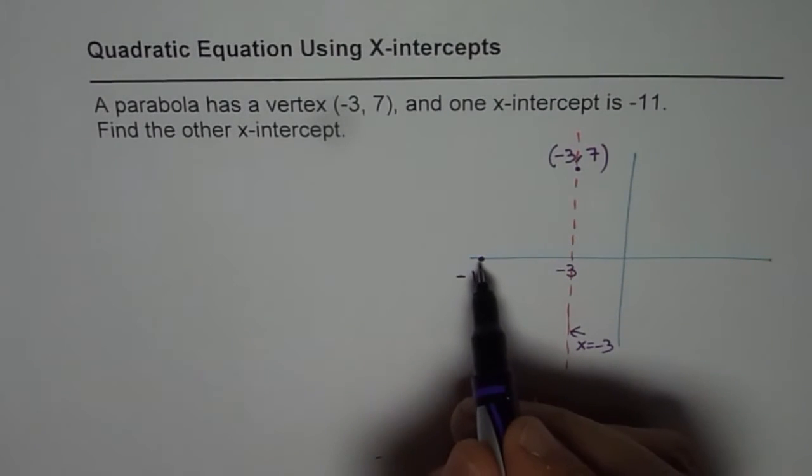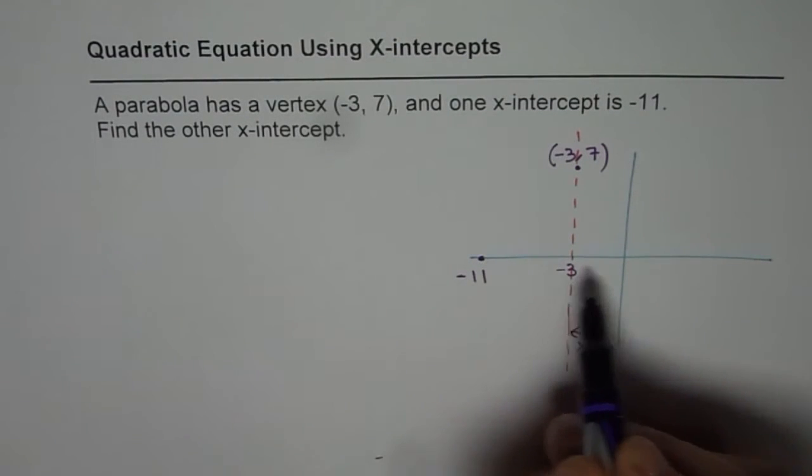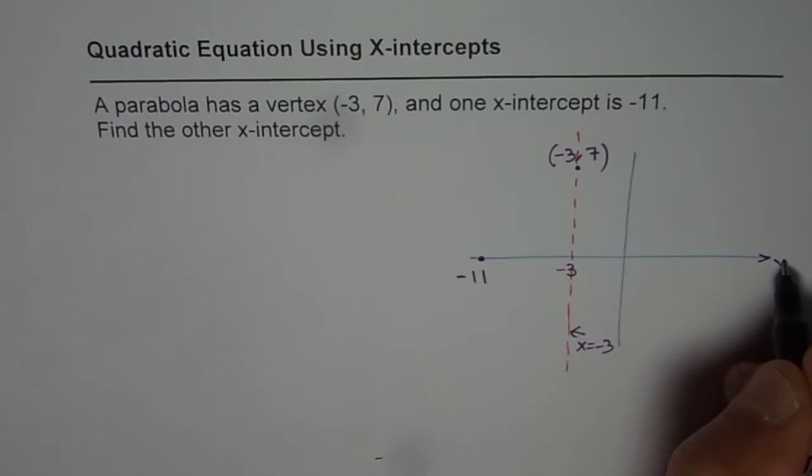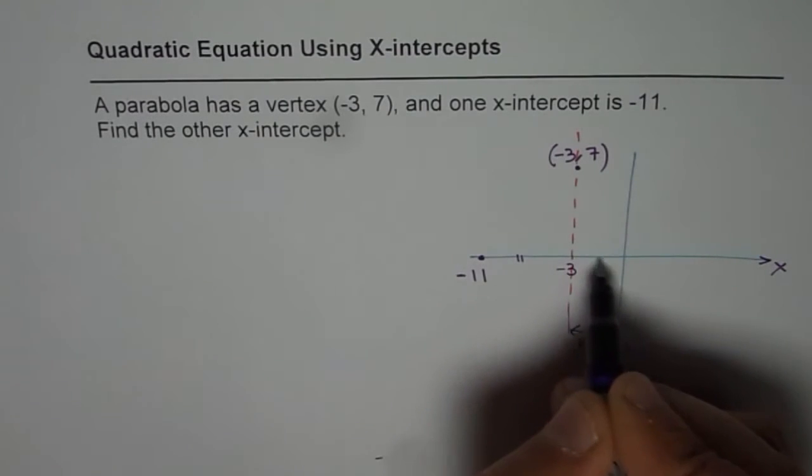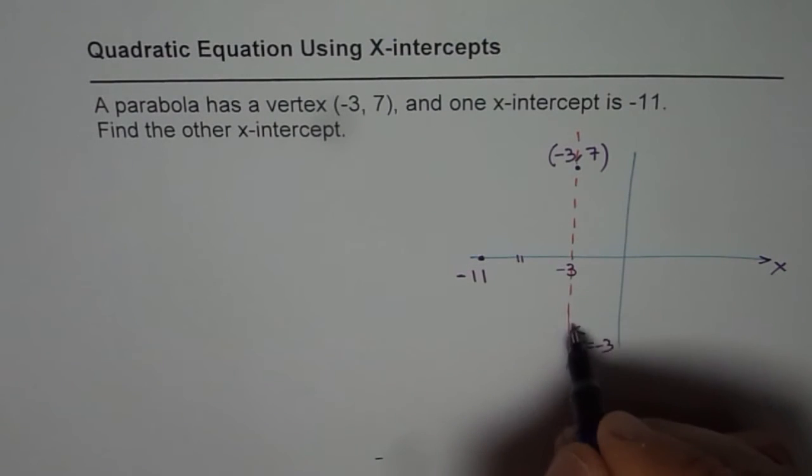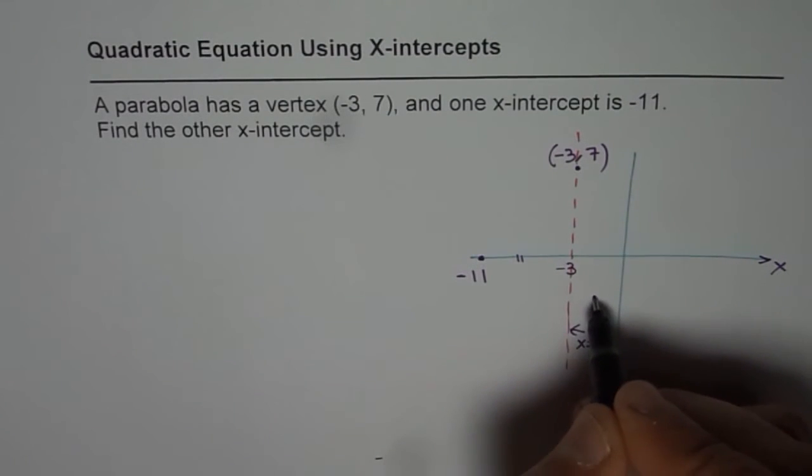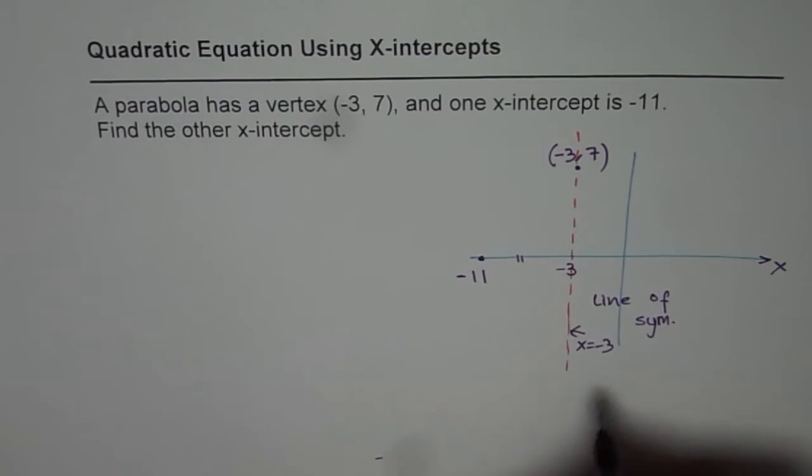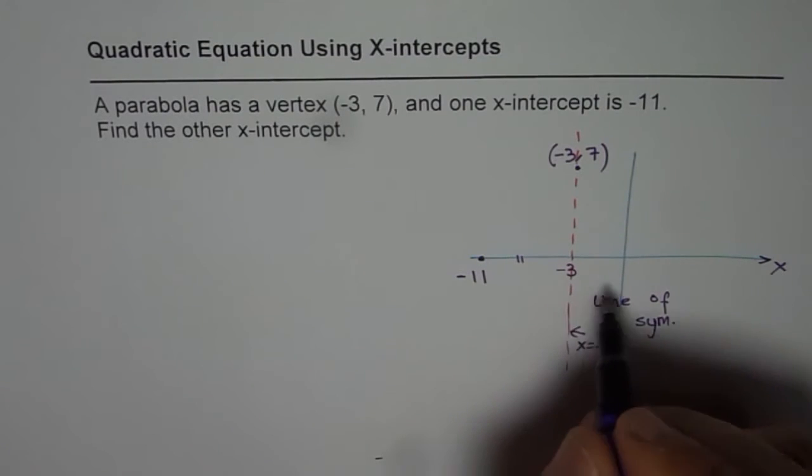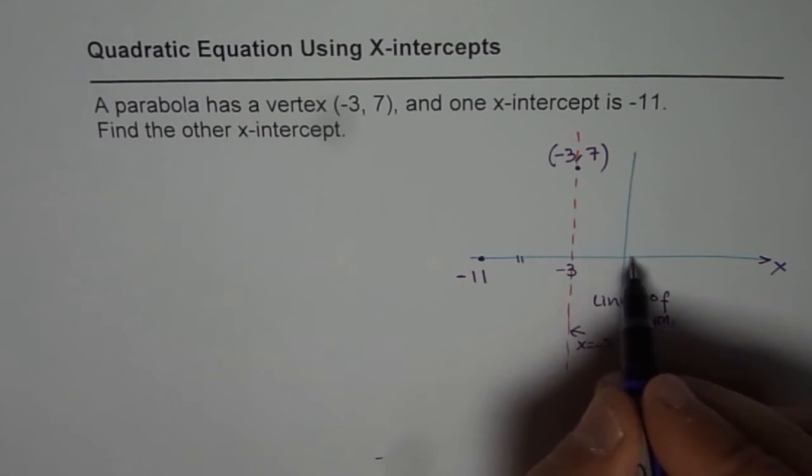The other x-intercept will be on the x-axis itself, correct? Second thing is that it has to be same distance away because that is the line of symmetry. This is the line of symmetry. Since this is the line of symmetry, the other x-intercept will be same distance away.